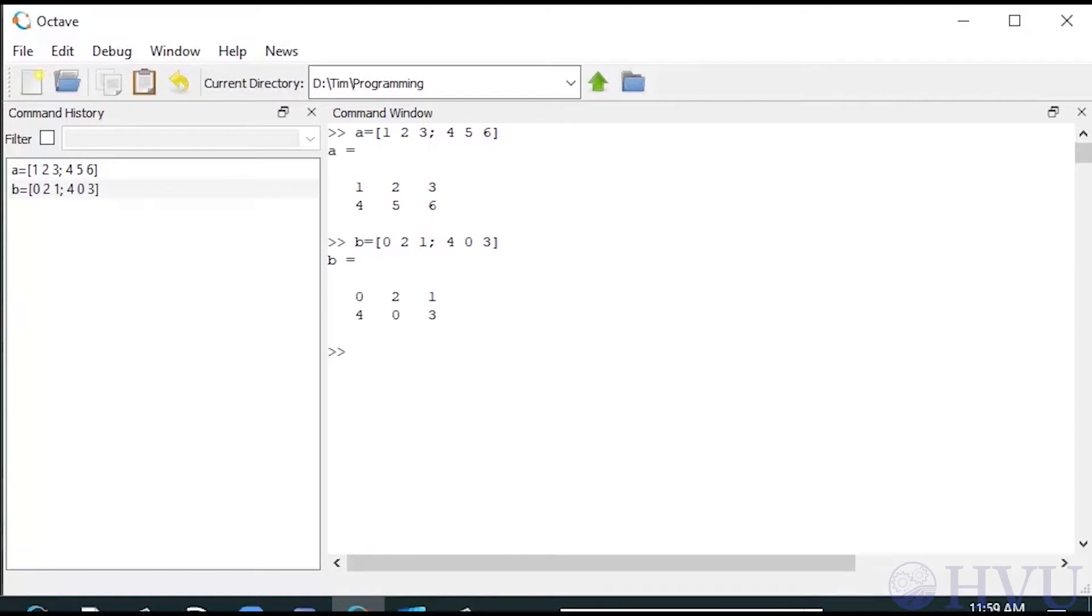I can add these two arrays by typing A plus B, and I can subtract B from A by typing A minus B. Matrix addition and subtraction require the matrices to be the same size, and these arrays meet this requirement.